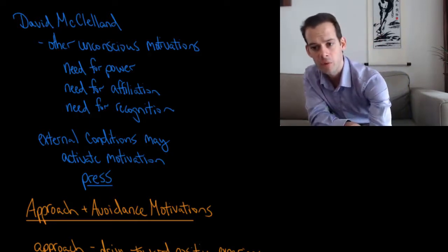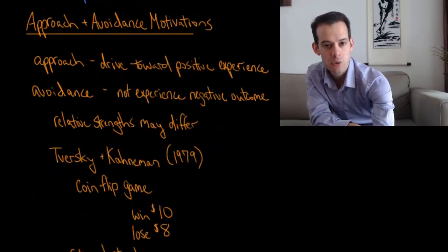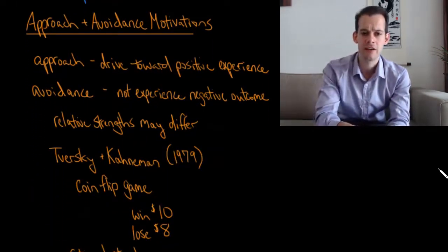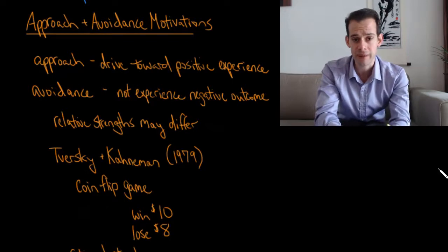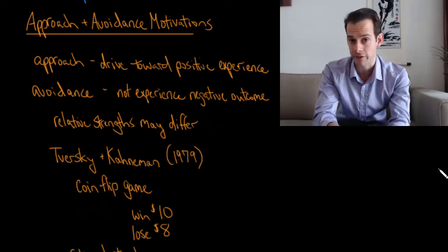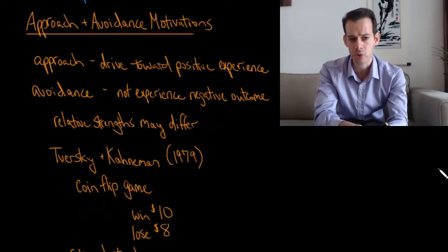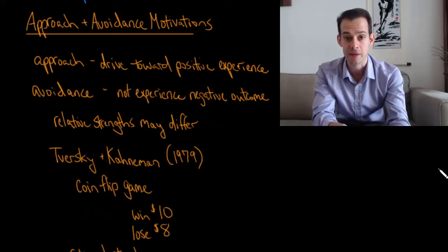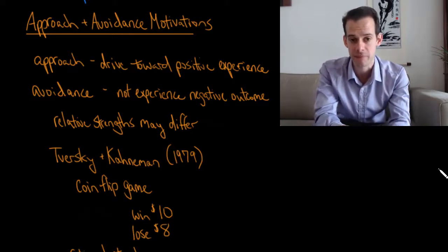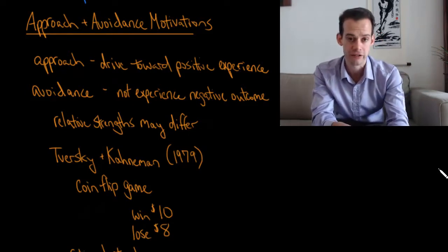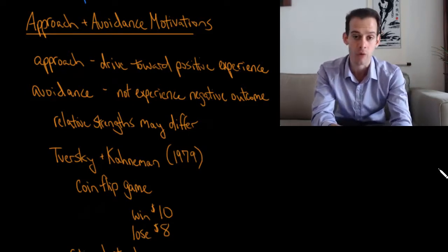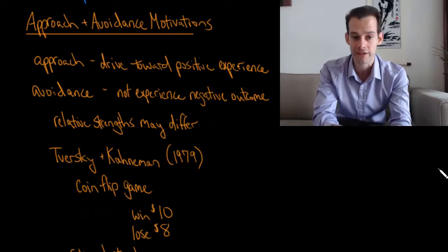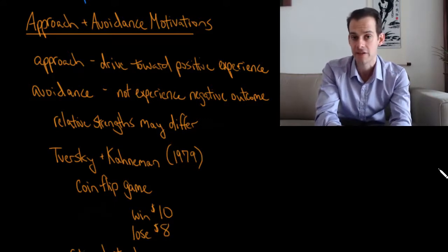Another way that we can think about motivations, either conscious or unconscious, is to divide them up into approach motivations and avoidance motivations. An approach motivation is a motivation towards experiencing something positive, getting some positive experience. But we also have motivations to avoid negative outcomes. An avoidance motivation is to not experience something bad.